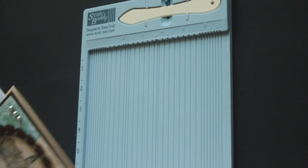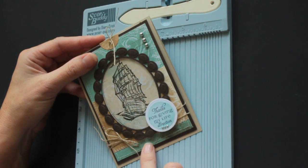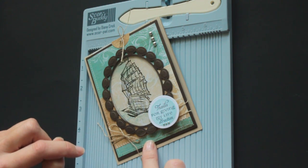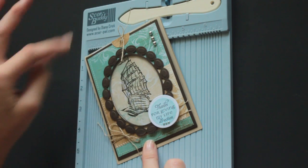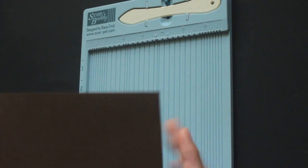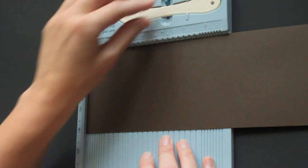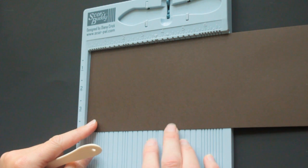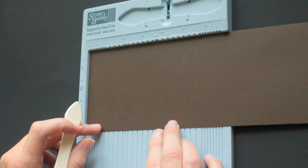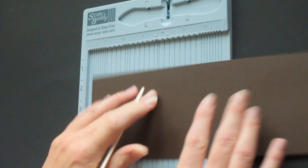For my sample, I'm going to show you the technique a little bit different than in the photo tutorial, just because I wanted to use Nestabilities to cut my window. If you want to use Nestabilities, start with a 4x10.5 piece of cardstock, and you score it at 4.25, and fold it in half.